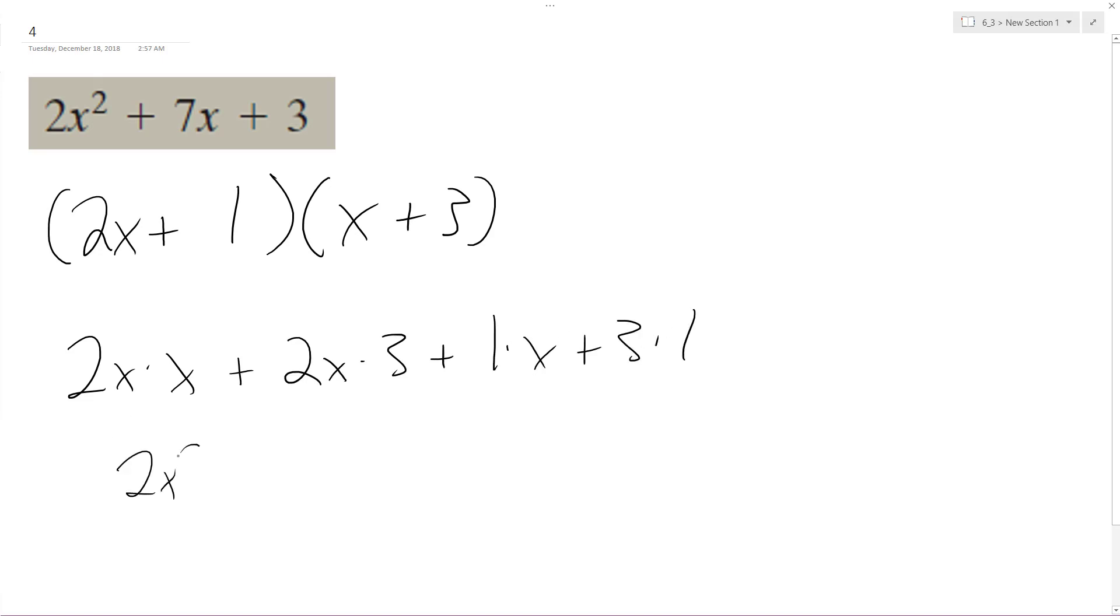So we have 2x squared, and then plus 2x—okay, sorry, spaced out there. This becomes 6x, and then plus x, plus 3,